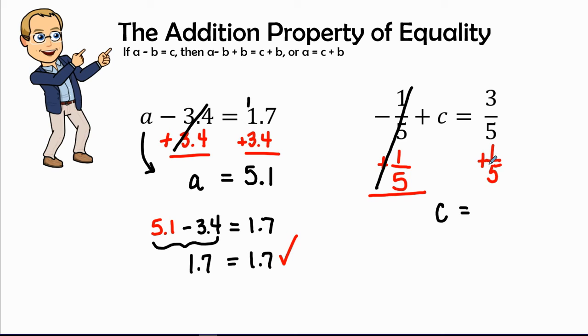And I went ahead and I forgot to add this one fifth to the other side. Remember, in the addition property of equality, what I do on one side of the equation I'm going to do on the other side of the equation. So I see right here I have two fractions with the same denominators or like denominators. Therefore, I can just go ahead and add the numerators. Three plus one is four, and I keep my denominator of five.